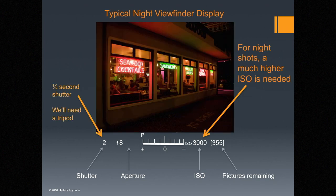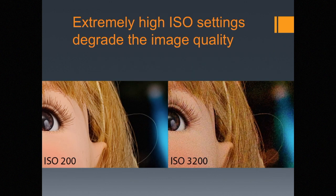This is a typical night viewfinder display. In this image, we've had to go up to a half a second — we'll need a tripod for that. The aperture is at f8, and I had to raise the ISO to 3000 to get more collection of light to make the image brighter.